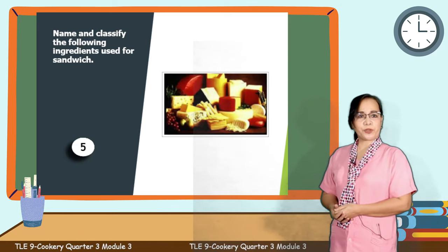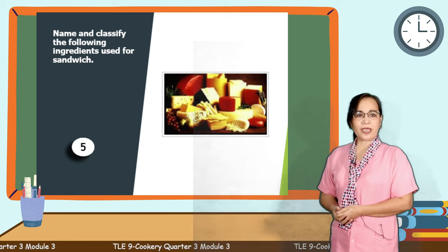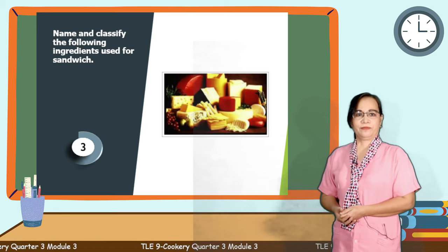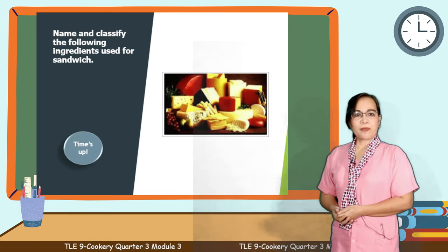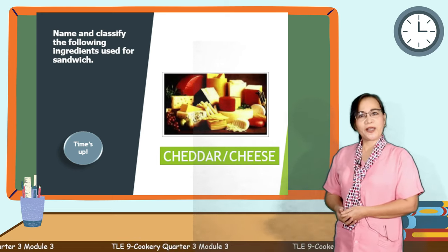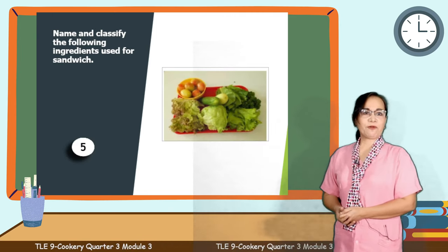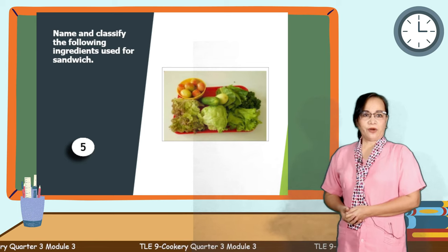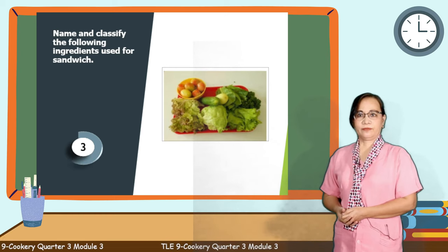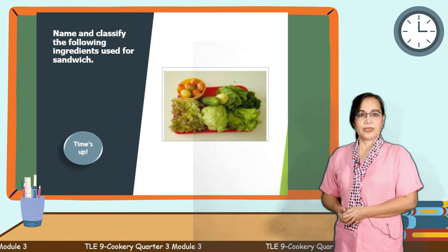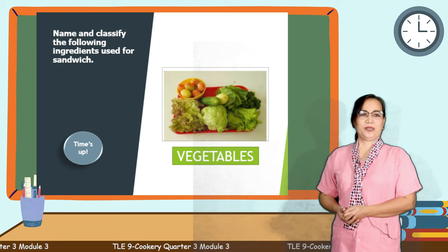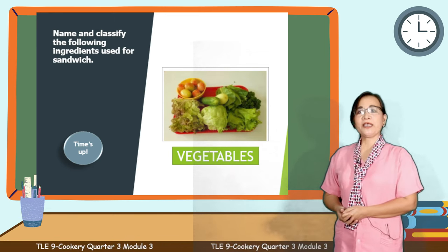How about picture number 2? Another 5 seconds to figure it out. Timer starts now. Time's up. The answer is cheddar, a type of cheese. You got it right! Let's see if you can guess the last picture. Your time starts now. Time's up. You are right! The answer is vegetables. So those are the different ingredients in making sandwiches.